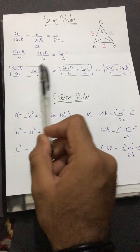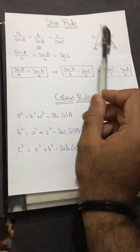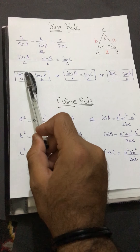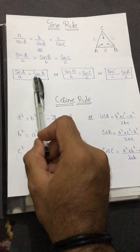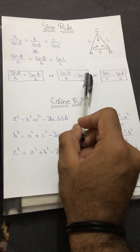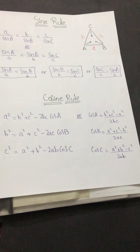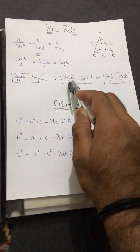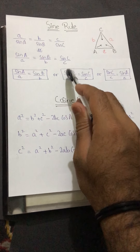We do not use the whole formula at once — we just pair them. The data tells you which pair to use. Look at your given data and identify which two to use. For example, if sinA and a and sinB are given and you need to find b, use the a/sinA = b/sinB pair. Similarly, pair b/sinB = c/sinC or a/sinA = c/sinC depending on what is given.